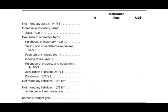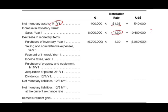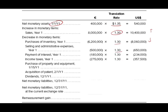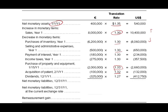Starting with net monetary assets on January 1st — only cash of €400,000 times $1.35 equals $540,000. Sales of €8,000,000 translated at the average rate gives $10,400,000, increasing net monetary assets. Then subtract inventory purchases of €6,200,000 at the average rate ($8,060,000), selling expenses at the average rate, interest payments at the average rate, income taxes at the average rate, PP&E at the historical rate, patent at the historical rate, and dividends at the historical rate. Overall, we arrive at a net monetary liability position.